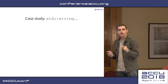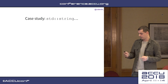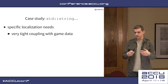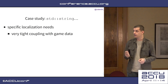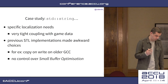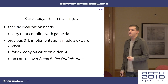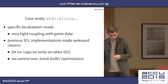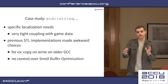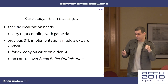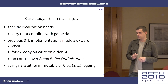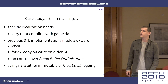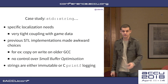Let's do a quick case study. Even if you use the STL, you're not going to use std::string. Why? Because games have very specialized, tight coupling with game data — you have localization, and you know what you're doing, so you package it tightly. Previous STL implementations made some awkward choices: GCC for a while did copy-on-write optimization, which is not good in multi-threaded environments. Nowadays everyone does small buffer optimization, but you don't have control over how many characters you reserve before going to the heap. Strings in games tend to be immutable — you load them from disk and just display them.